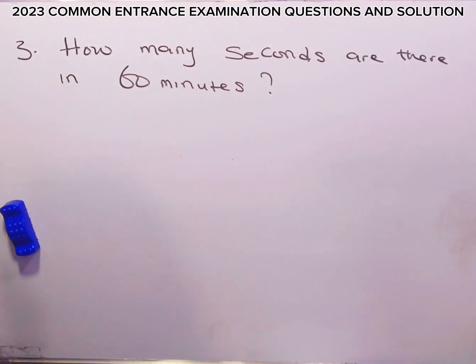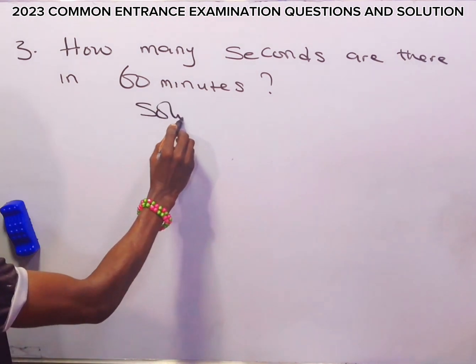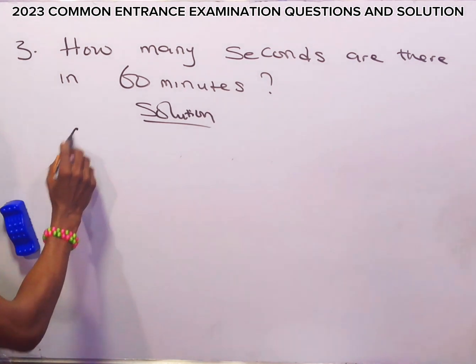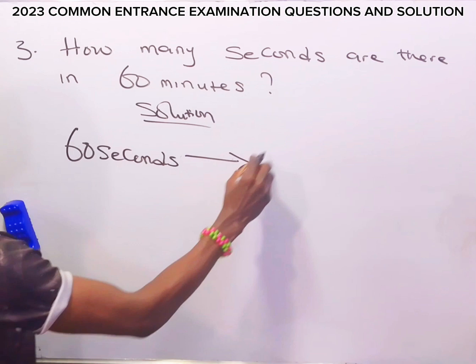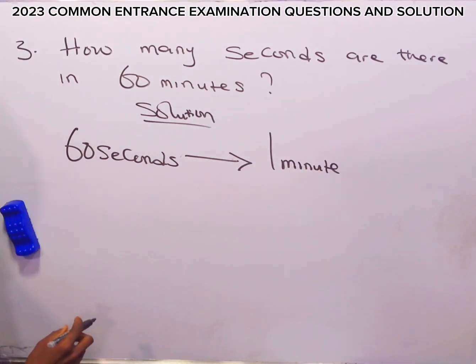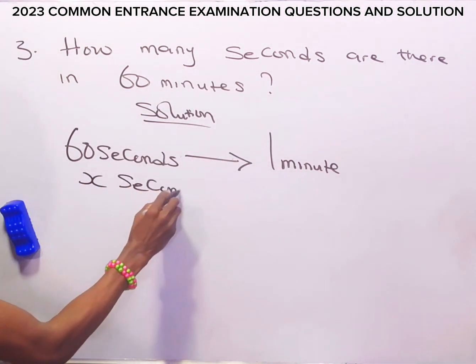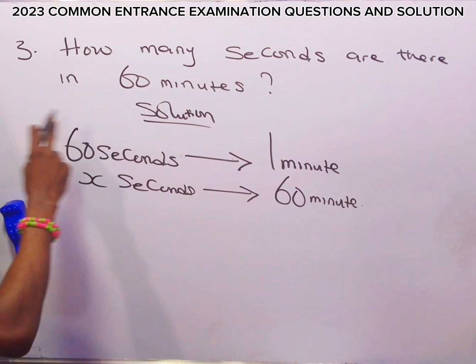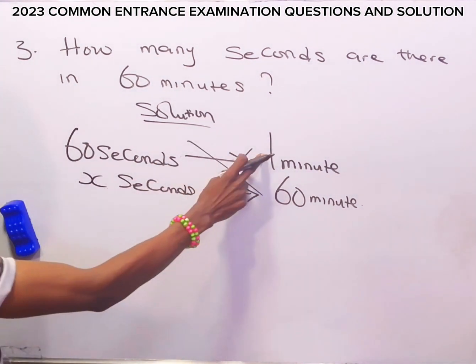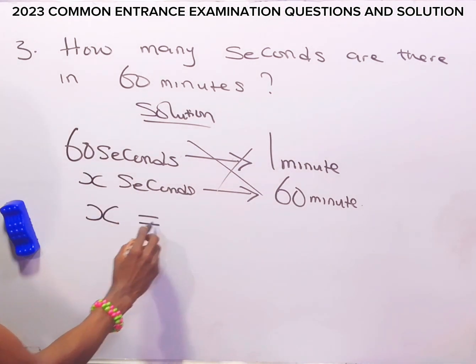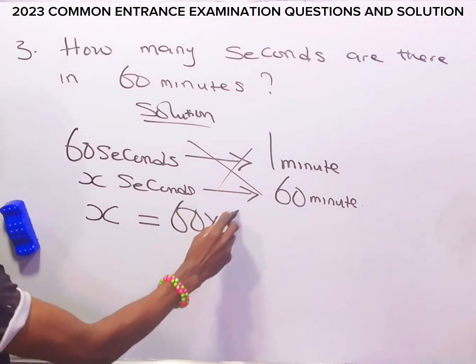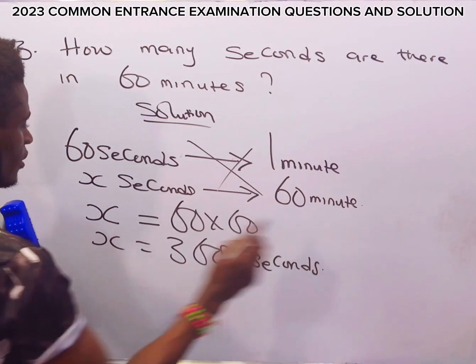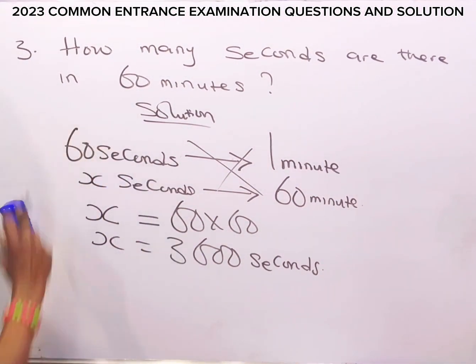How many seconds are there in 60 minutes? We are looking for the number of seconds that are there in 60 minutes. Therefore, we have 60 seconds to give us 1 minute. Now, how many seconds? So X seconds will give us 60 minutes. From here, we cross-multiply. X times 1 is X, to be equal to 60 times 60. So X will now give us 3,600 seconds. So there are 3,600 seconds in 60 minutes.